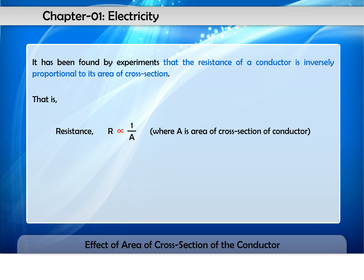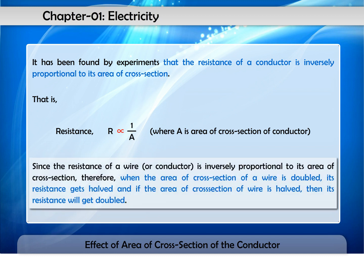Where A is area of cross-section of conductor. Since the resistance of a wire or conductor is inversely proportional to its area of cross-section, therefore,